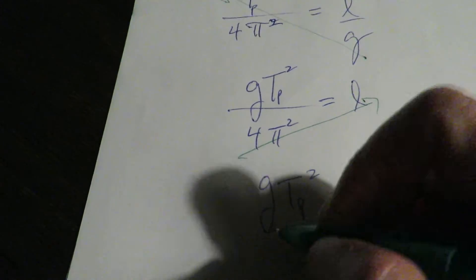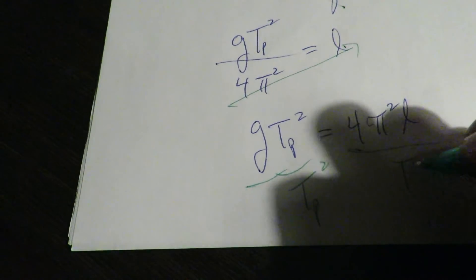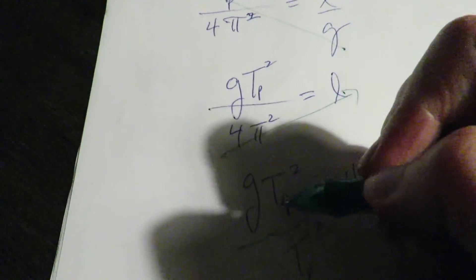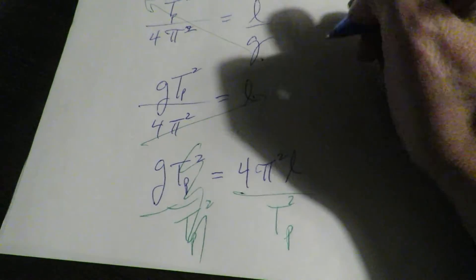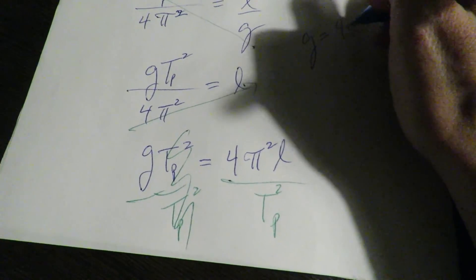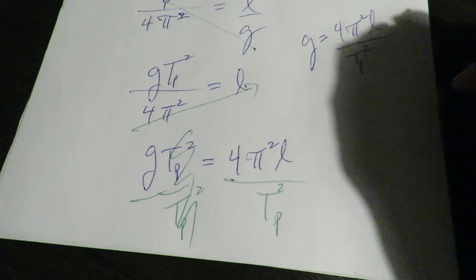And we almost got the G, we just got to divide off this T sub P quantity squared. So that's going to give us G equals four pi squared L over T sub P quantity squared.